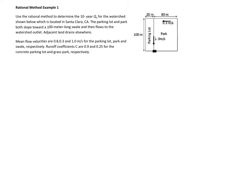We're going to use the rational method to determine the 10-year peak flow for the watershed shown in the figure. It's really not a watershed, right? It's a parking lot and a park, and it's located in Santa Clara. They slope towards a 100-meter-long swale, then flows to the watershed outlet.